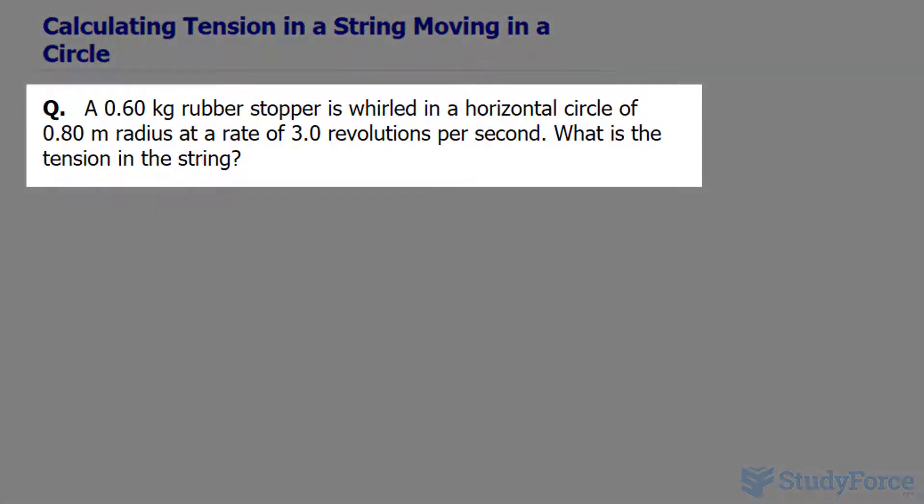The question reads: a 0.60 kilogram rubber stopper is whirled in a horizontal circle of 0.80 meters radius at a rate of 3.0 revolutions per second. What is the tension in the string?